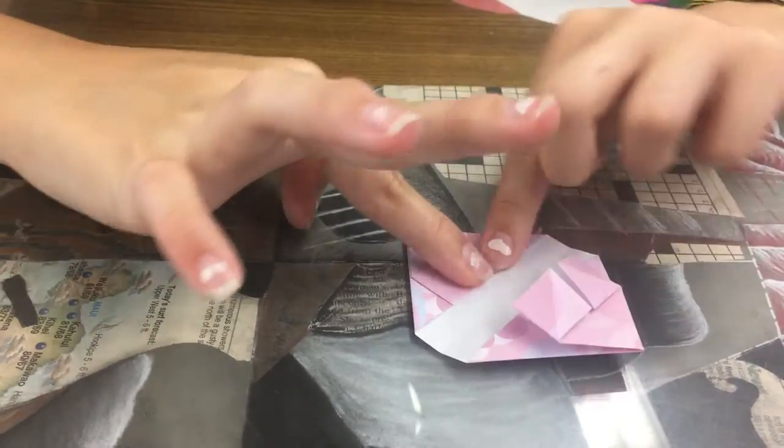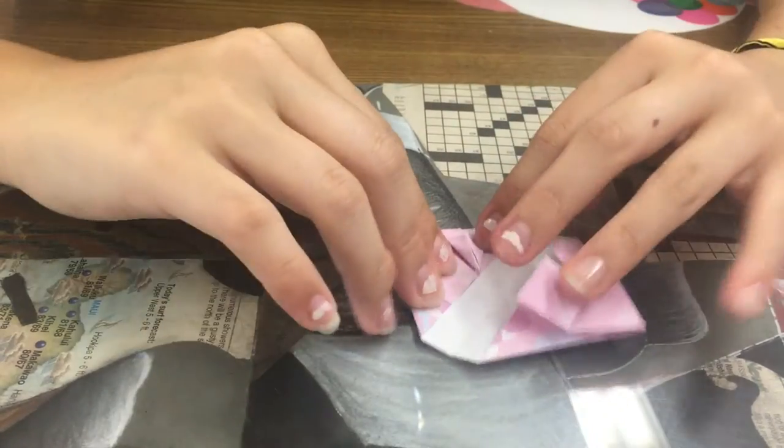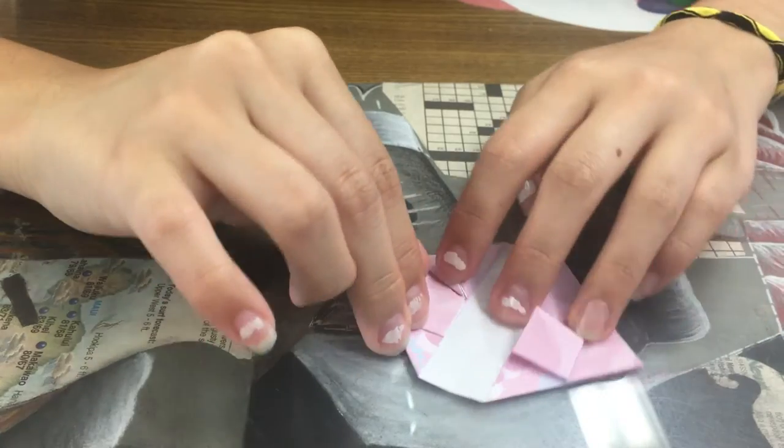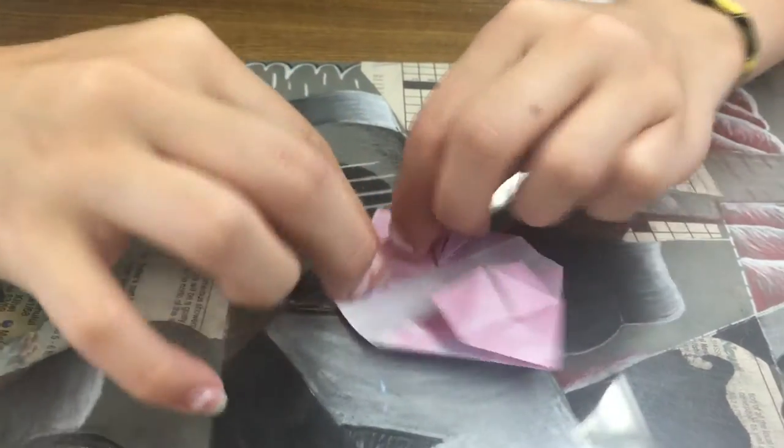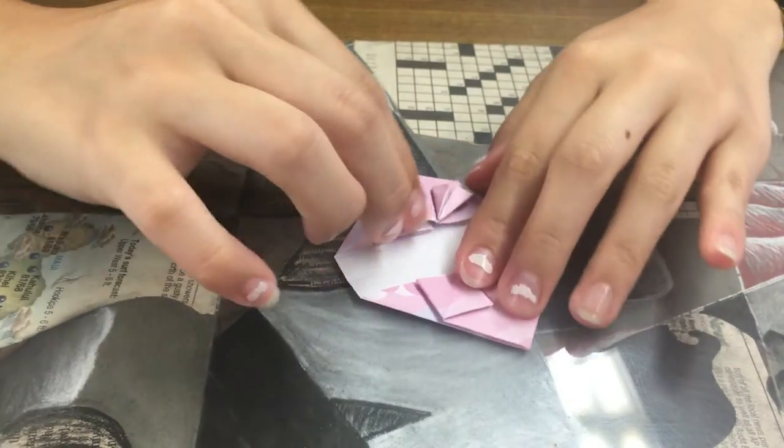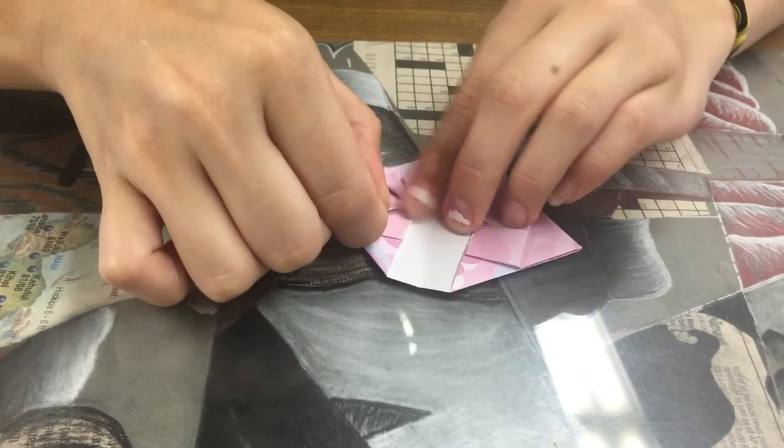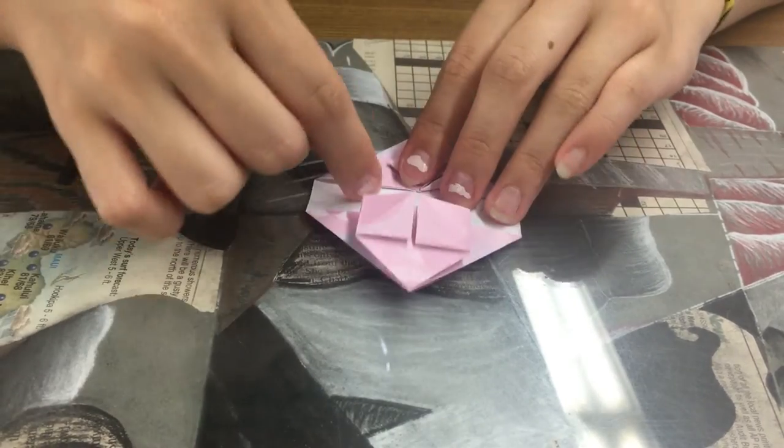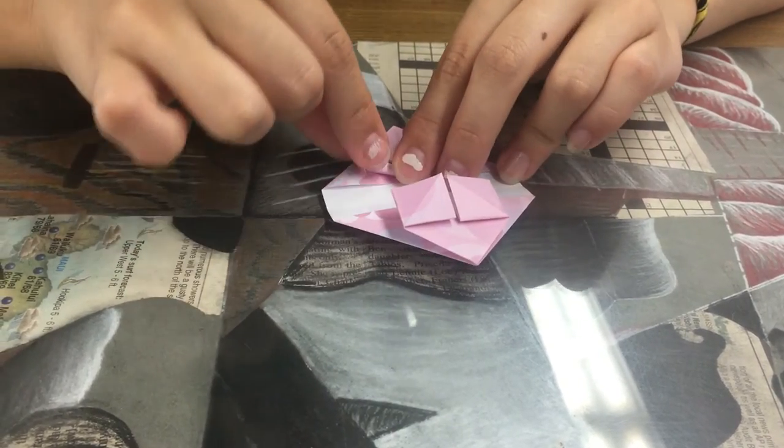So your result is diamond looking and you want to make sure this flat line is up here, not down here. Sometimes people might fold it this way, you don't want to do that, you want to do it this way. And then you're going to repeat that for all of the squares.